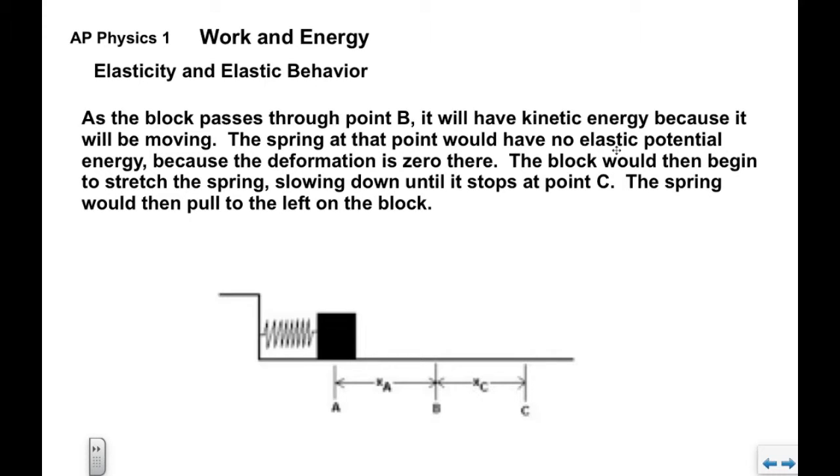As the block passes through point B, it then continues moving to the right, and it would start to stretch the spring out and it would slow down until it would stop at point C. The spring would then be under tension and it would be pulling with the spring force equal to k times xc, pulling on the block to the left. It would also have elastic potential energy in it equal to one-half k xc squared.